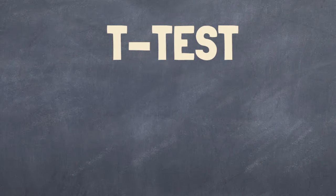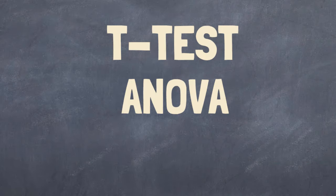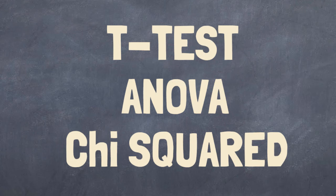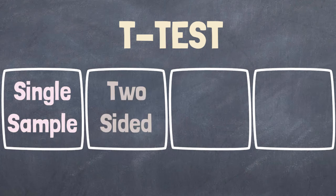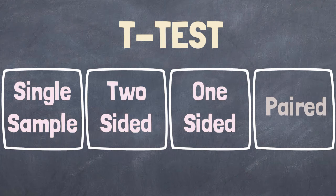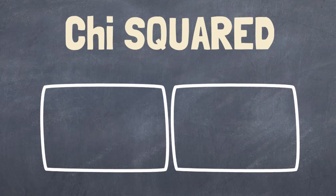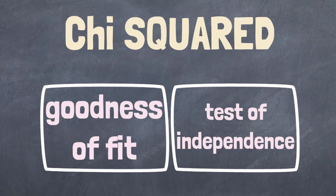We're going to cover three things in this video: the t-test, ANOVA which is analysis of variance, and the chi-squared test. For the t-test there'll be the single sample, two-tailed, one-tailed, and paired. We're going to do all four of those, and for the chi-squared there's the goodness of fit and the test of independence. You're going to find all of this super easy to understand, so stick with me — let's do this.